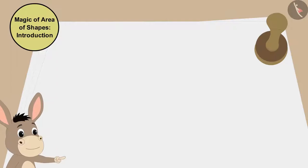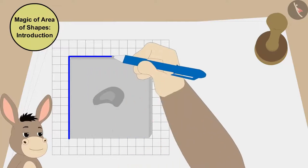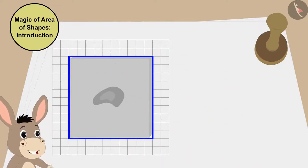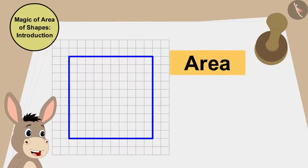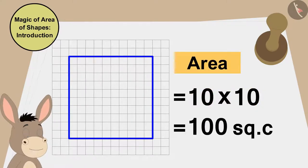Bholla first drew the outline of the cashew barfi on a grid paper like this. The area of this cashew barfi is 10 times 10, that's 100 square centimeters.